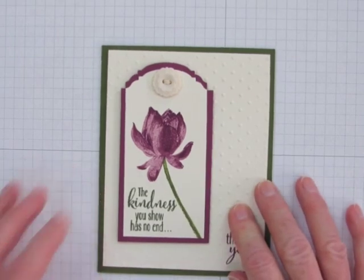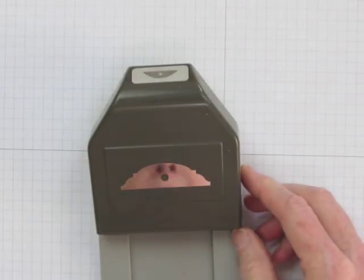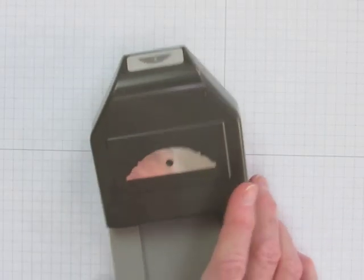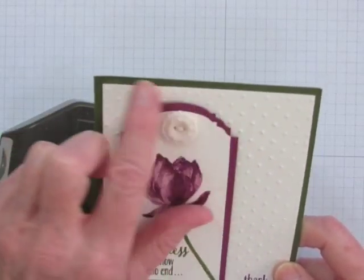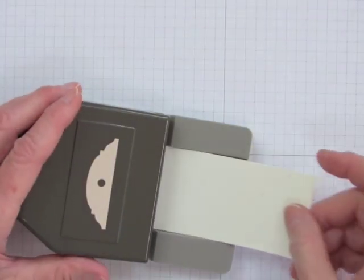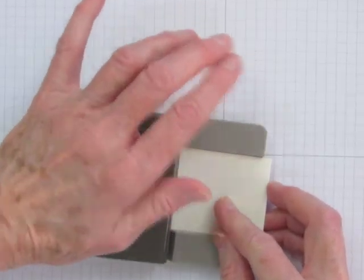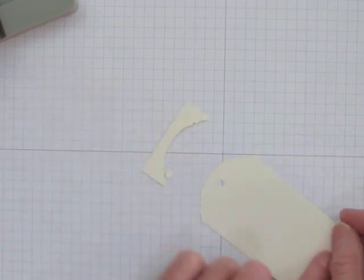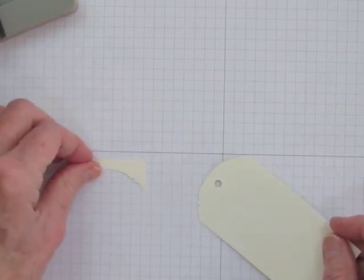Now I'll show you the ornate top tag which is made with the new ornate tag topper punch from Stampin' Up's Spring Occasions catalog. It doesn't look like much in the catalog but once it's set off with a mat like this I really like it a lot. First I'll punch the end of the cardstock and this actually takes a bigger bite out of the length than the scallop tag topper punch does. This one's about a quarter of an inch.